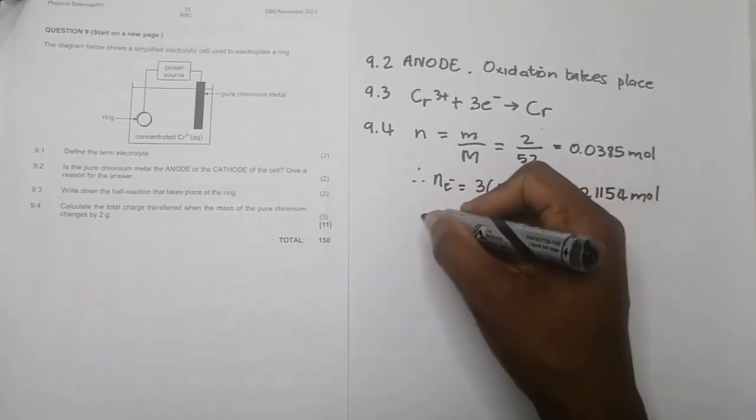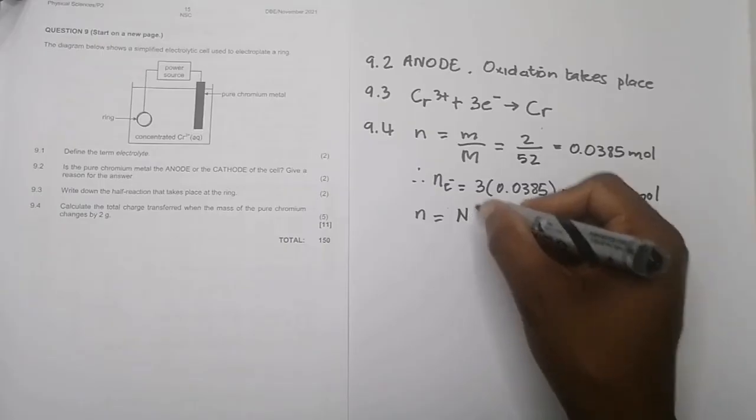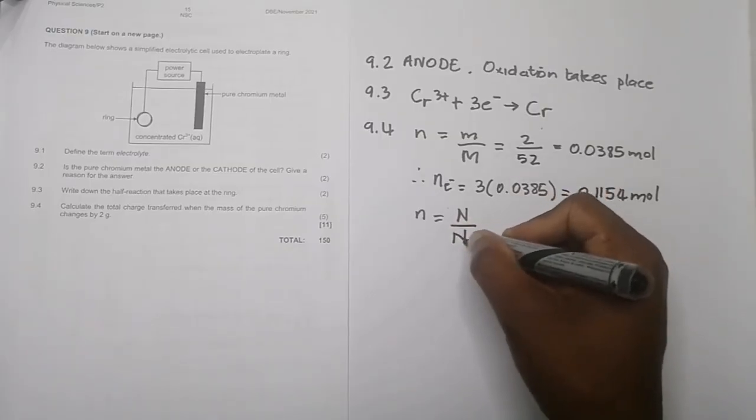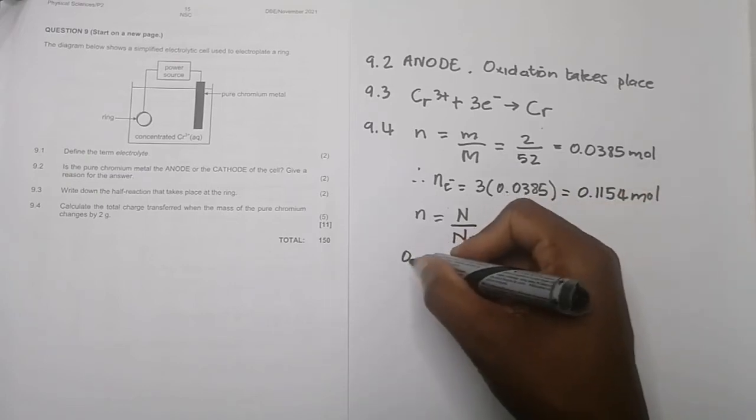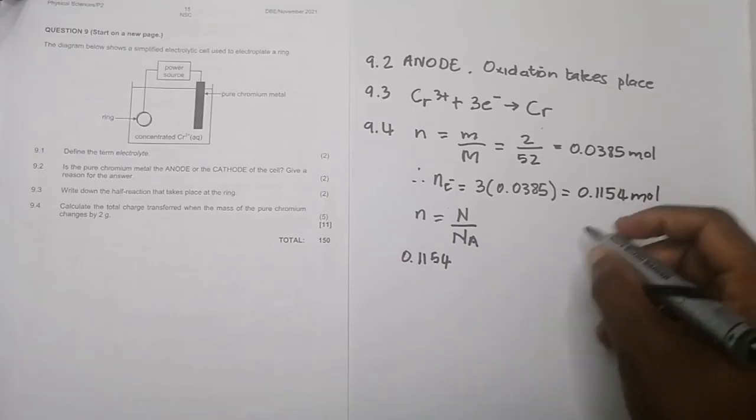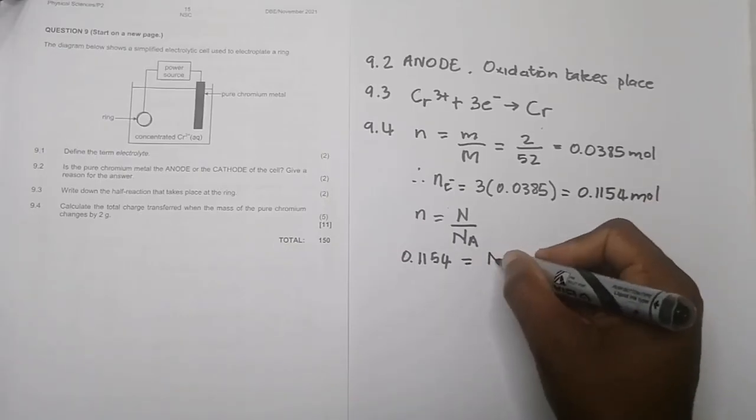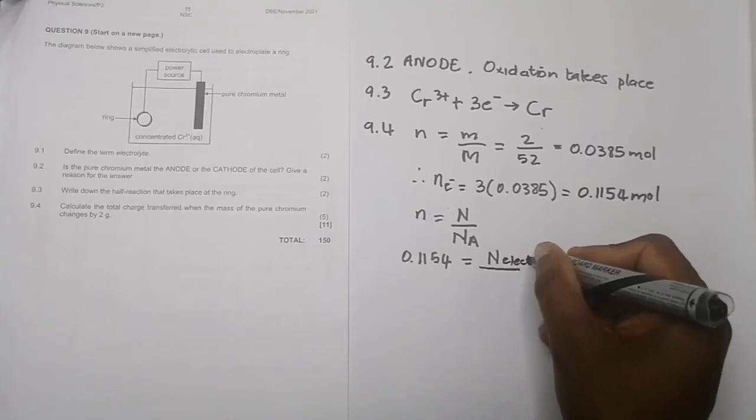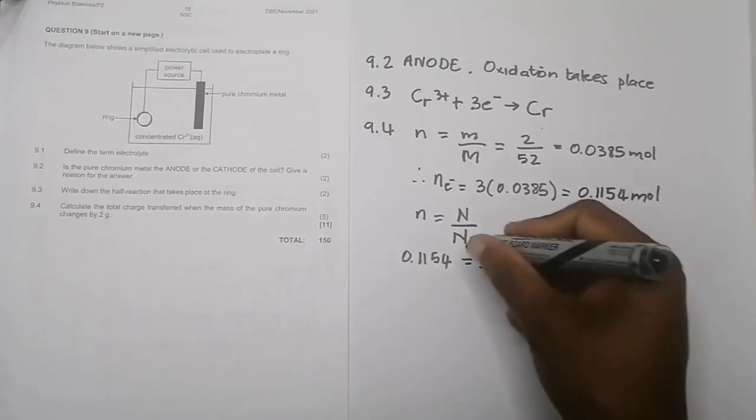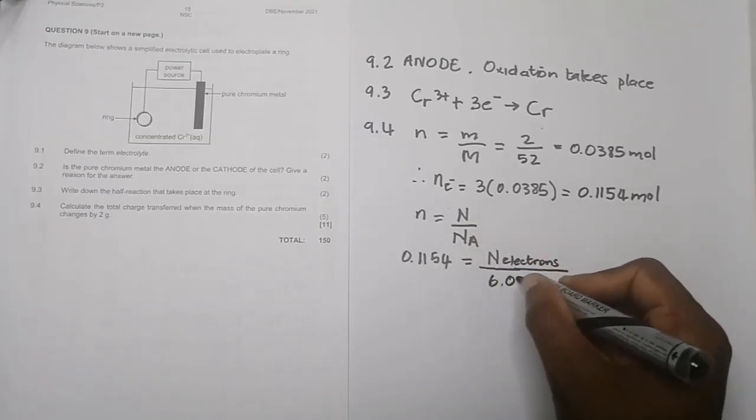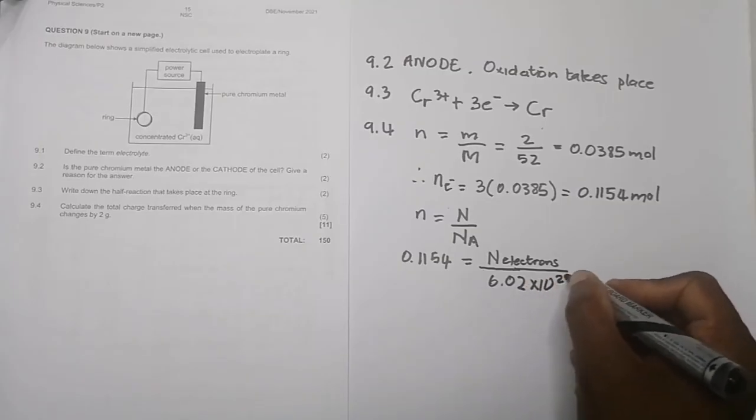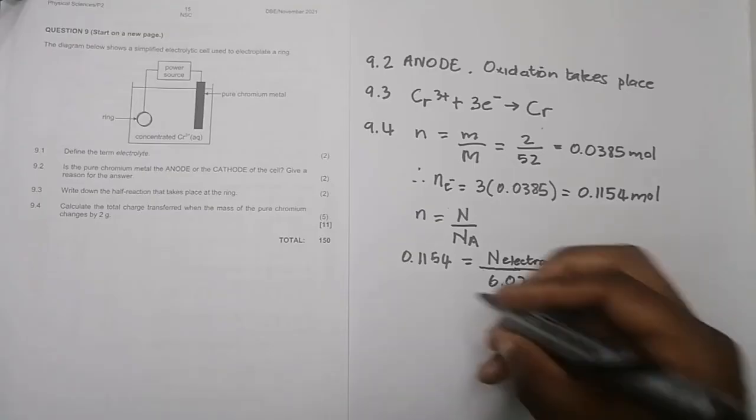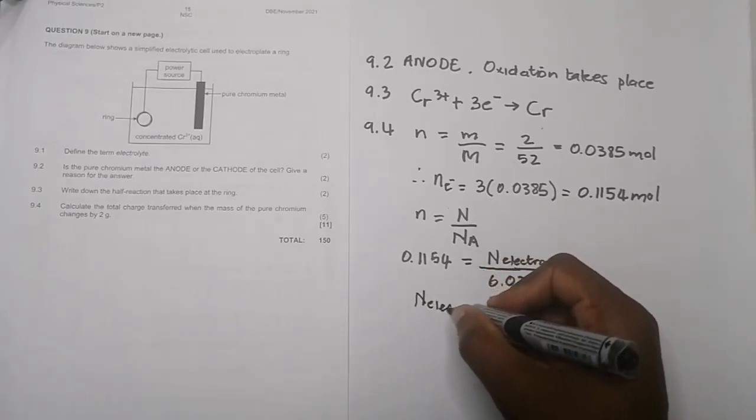Now I've got the number of moles of those electrons. I would say n equals the number of electrons divided by Avogadro's number. So 0.1154, which is the number of particles or electrons, divided by 6.02 × 10²³. If you go through my stoichiometry videos, I actually go through that.